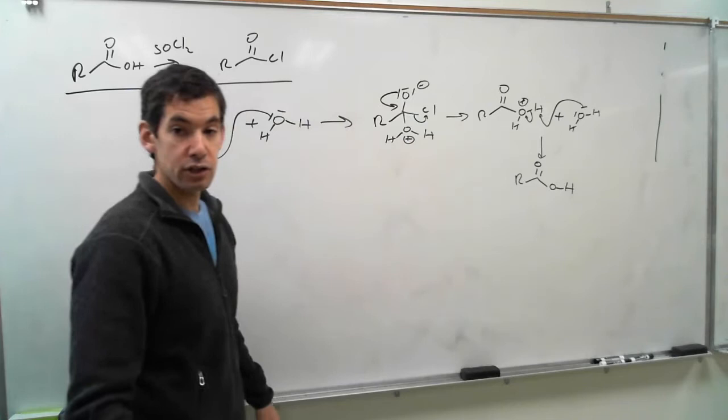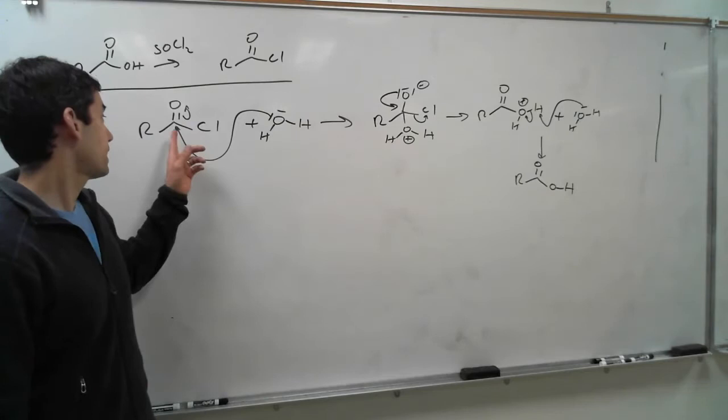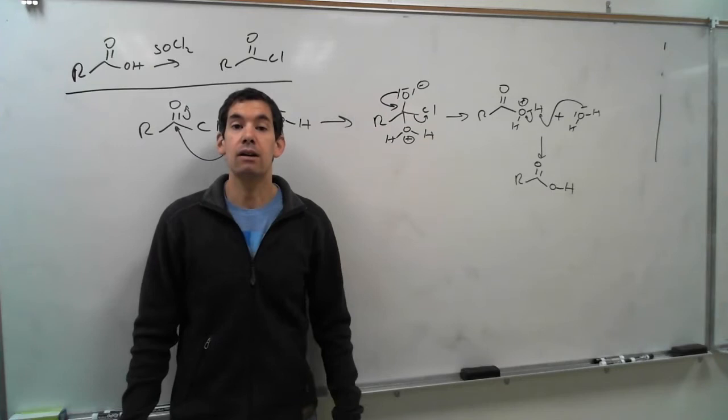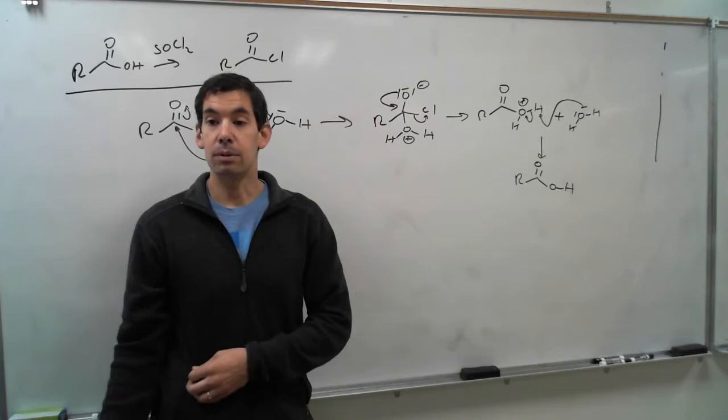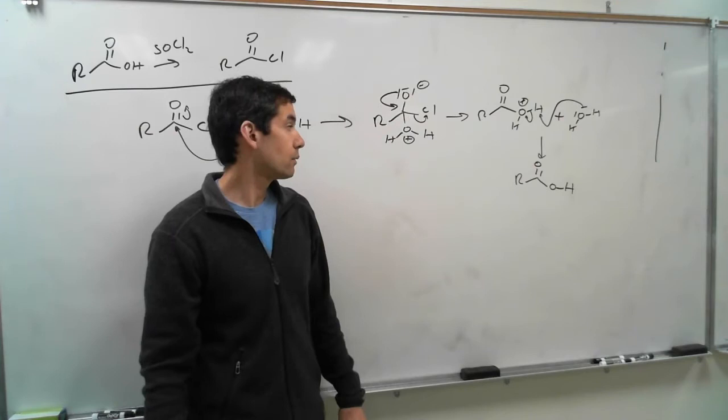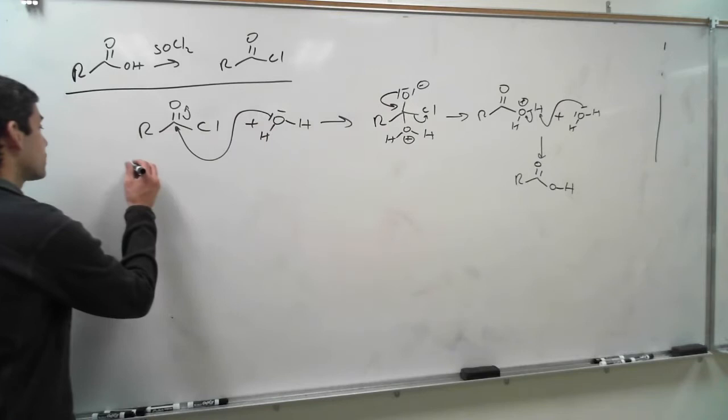With a lot of these reactions, the steps are very similar: we have an attack on the carbonyl, electrons come up, electrons come back down. In every case, it's going to kick off that chlorine — chlorine kicks off because it's a very, very good leaving group. It comes off and it's gone. So we'll keep that in mind as we look at each type of reaction for our acid chlorides.